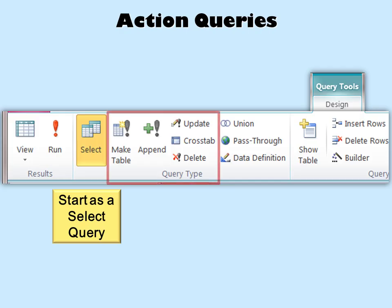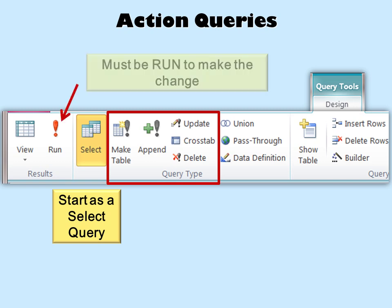Action queries must start as a select query. Even though you'll find them on the Query Tools Design tab, you must start as a select query first, and you must run them to make the change. All of the action queries have an exclamation point in them, because you have to run them to make them work.